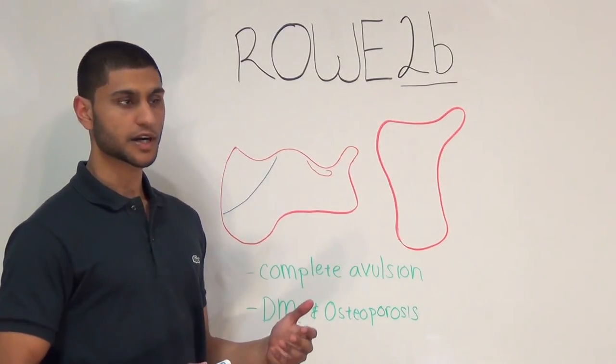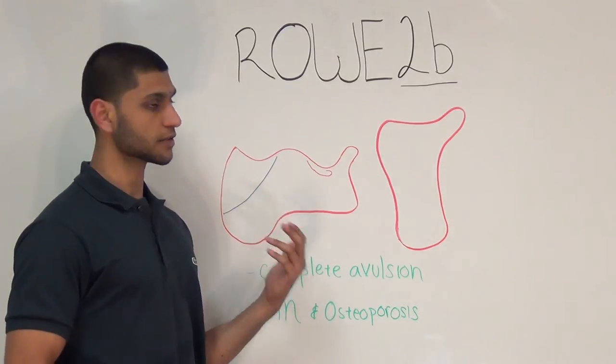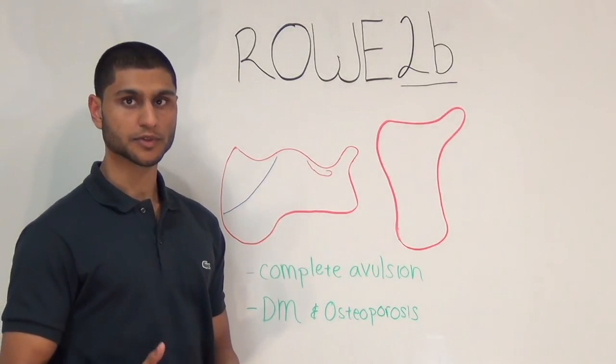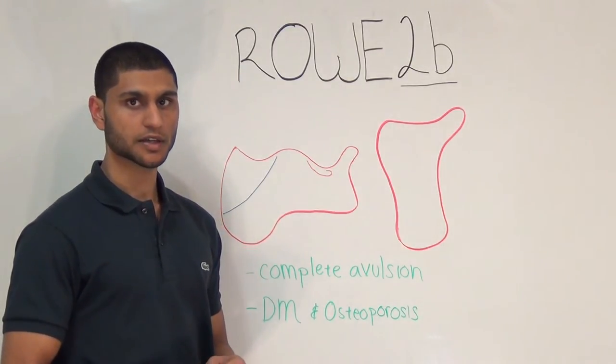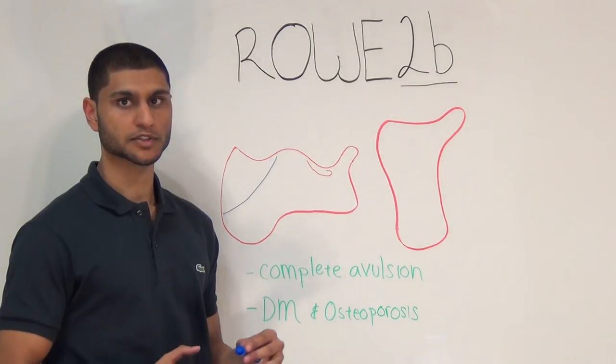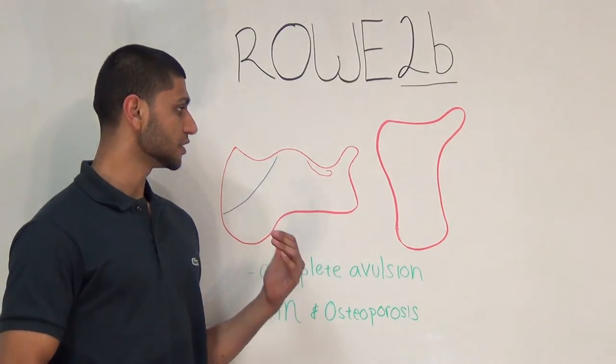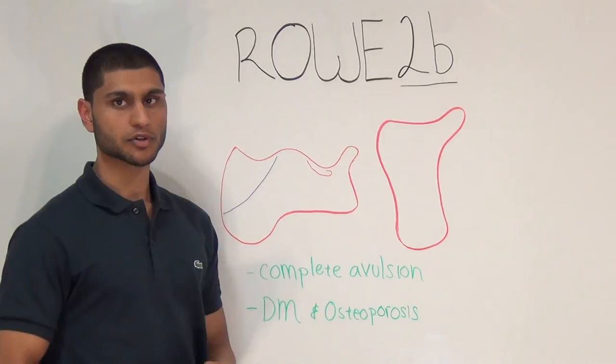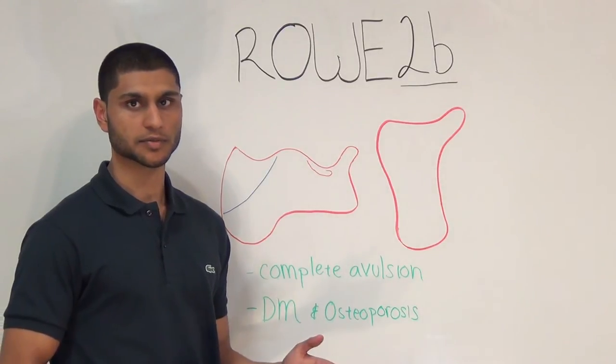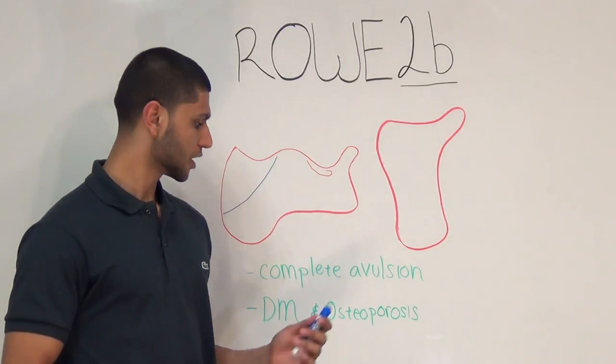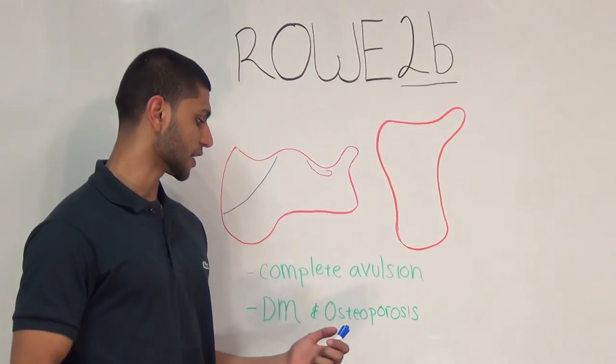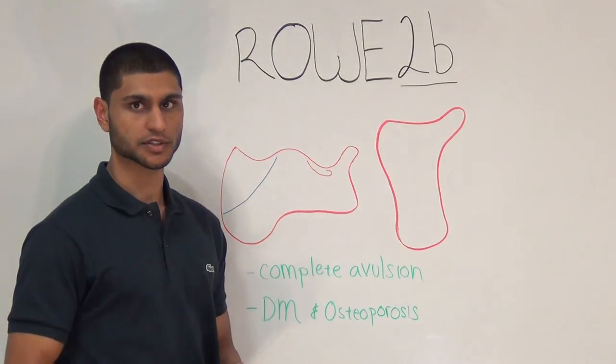Rowe 2b is an avulsion fracture of the entire insertion of the Achilles, so you have a complete dislocation. The mechanism of injury is the same as 2a. These can be intra-articular, so we order a CT to rule out subtalar joint injury. The patients are often older and have diabetes and osteoporosis.